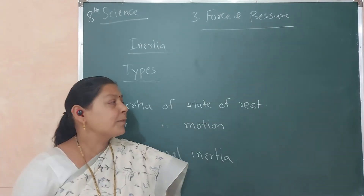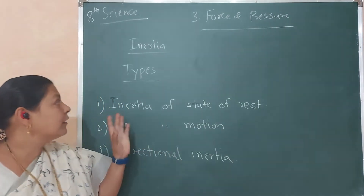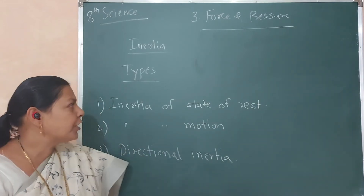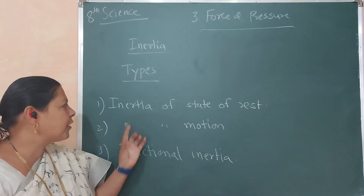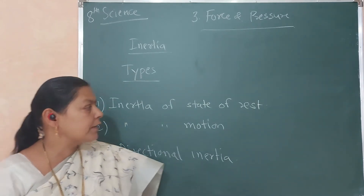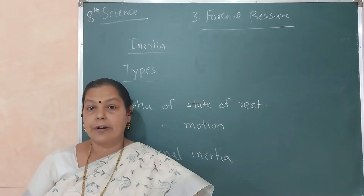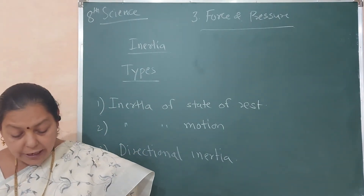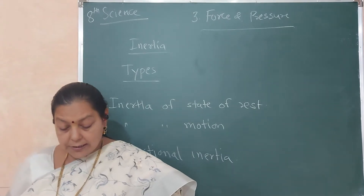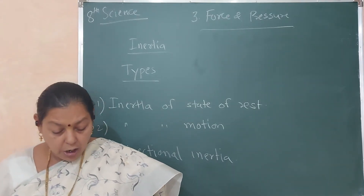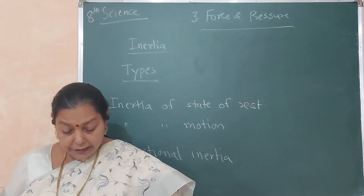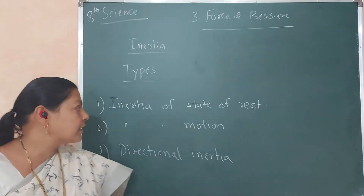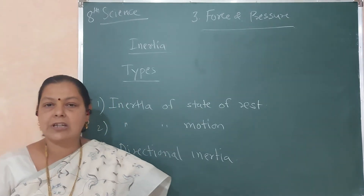The next part is the types of inertia. The first type is the inertia of state of rest. Definition: an object in a state of rest cannot change its state of rest due to its inherent property, and this property is called inertia of state of rest.